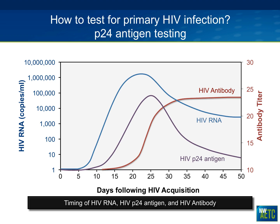Traditionally we've looked for viral RNA, but what's really exciting is P24 antigen testing. P24 antigen testing looks for one of the viral proteins. It's not quite as good as viral RNA — it appears probably three to five days after RNA can first be detected. Using blood-based assays, it's usually detectable when viral loads are about 15,000 to 30,000. So not as good as RNA, but still better than antibody testing, by about half a week.